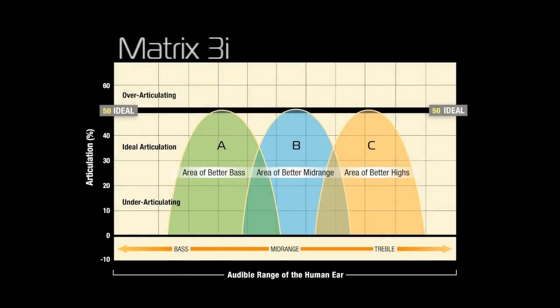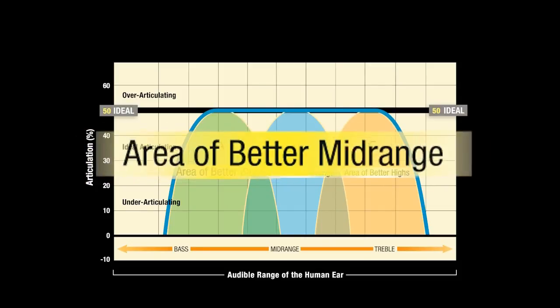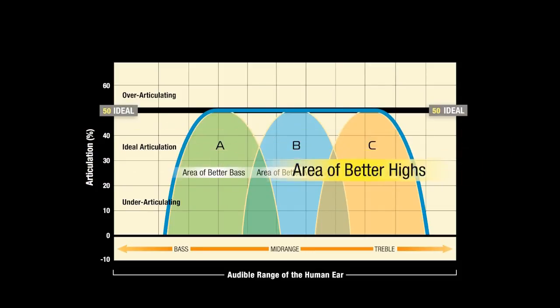For example, a Matrix 3 interconnect includes three poles of articulation, shown here as plots A, B, and C. This results in a bandwidth of articulation represented here by the blue line. Compared to just cable, you'll hear better bass, better midrange, and better highs.